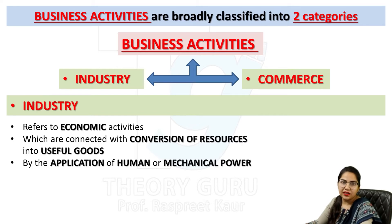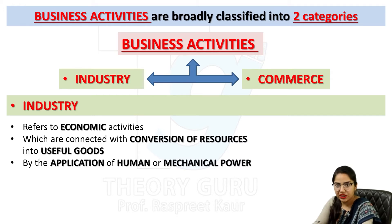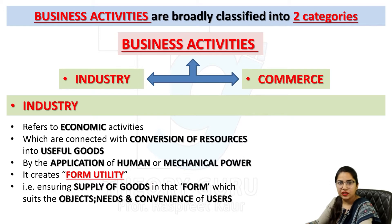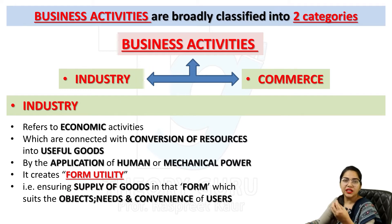By the application of human or mechanical power, how do we convert resources into useful goods? We either use human beings or use machinery. By using mechanical power, we convert raw material into finished products, or by using human resources, we convert raw material into finished products. This way, industry creates form utility for the consumers.